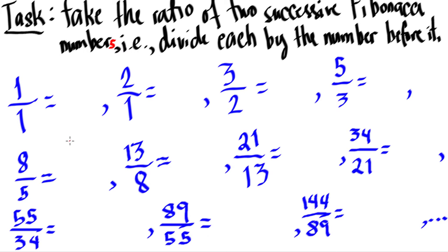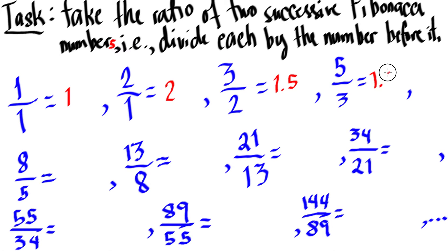So what is 1 divided by 1? Obviously that's 1. 2 divided by 1 is obviously 2. 3 divided by 2 — let's put it in decimal notation — is 1.5. 5 divided by 3 is 1.6 repeating infinitely, so let's write it as 1.6667, rounding on the fourth decimal place.